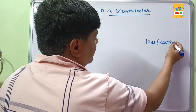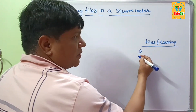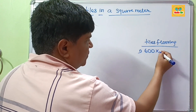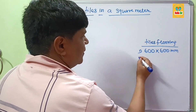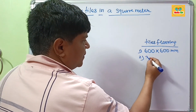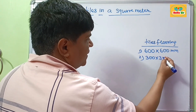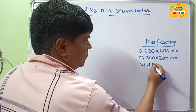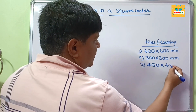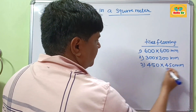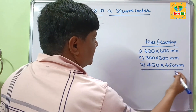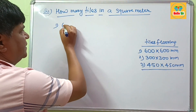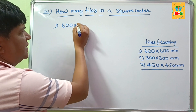For tile flooring, there are different dimensions of tile sizes. This one is 600 x 600 mm, it may be 300 x 300 mm, or 450 x 450 mm. These are the common tile sizes we will calculate for.